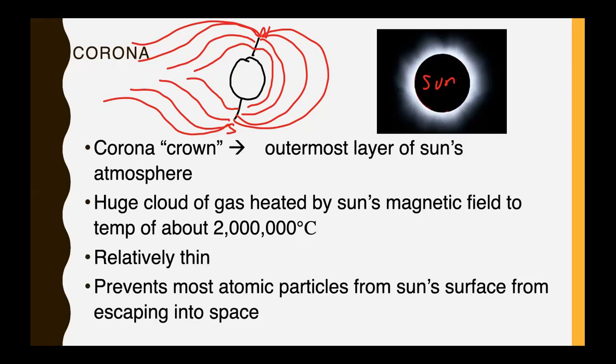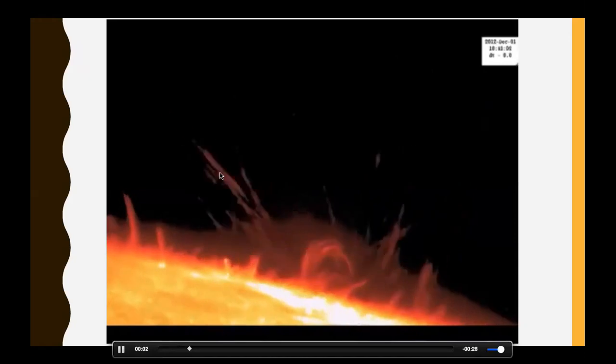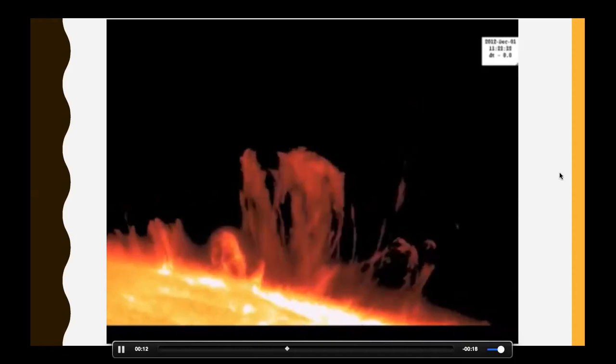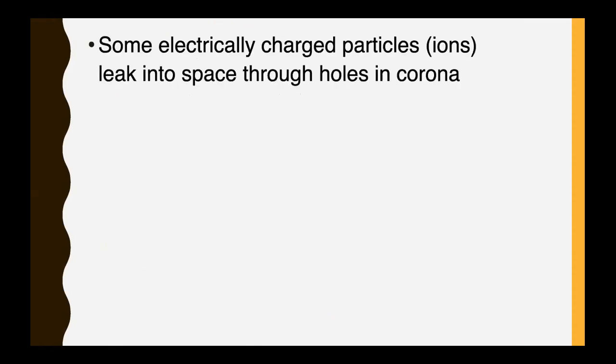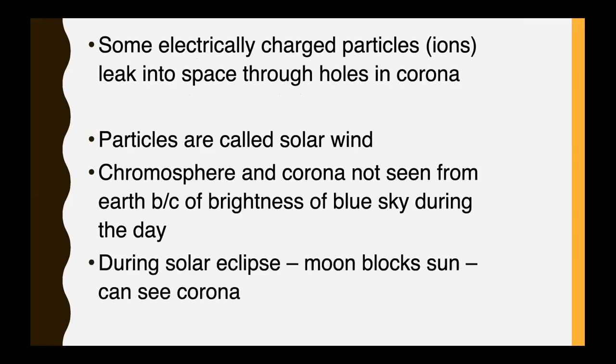The corona is relatively thin and prevents most of the atomic particles from the sun's surface from escaping into space. So even if they have energy and they kind of start to shoot up like you see there or over here, the corona keeps most of it in. But some electrically charged particles, which we know are called ions, can leak into space through holes in the corona. And this is what makes up solar wind. The chromosphere and the corona cannot be seen from Earth because of the brightness of the sky during the day. But during a solar eclipse, the moon blocks the sun and then you can see the corona.